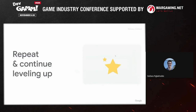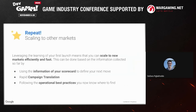Then you simply repeat, continue, and start leveling up. The good thing is that when you scale to new markets, you learn how to do it efficiently and fast. You have all the information collected from your scorecard to define the next priorities. You can rapidly translate campaigns and assets using all the tips we saw. You can follow the operational best practices — and you know where to find them. It becomes an easier journey as you go along.